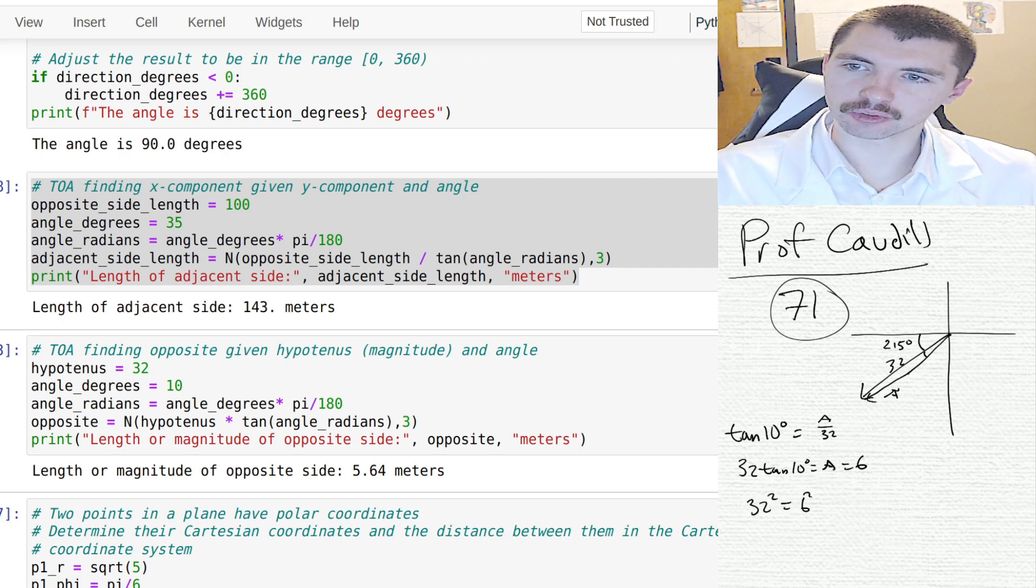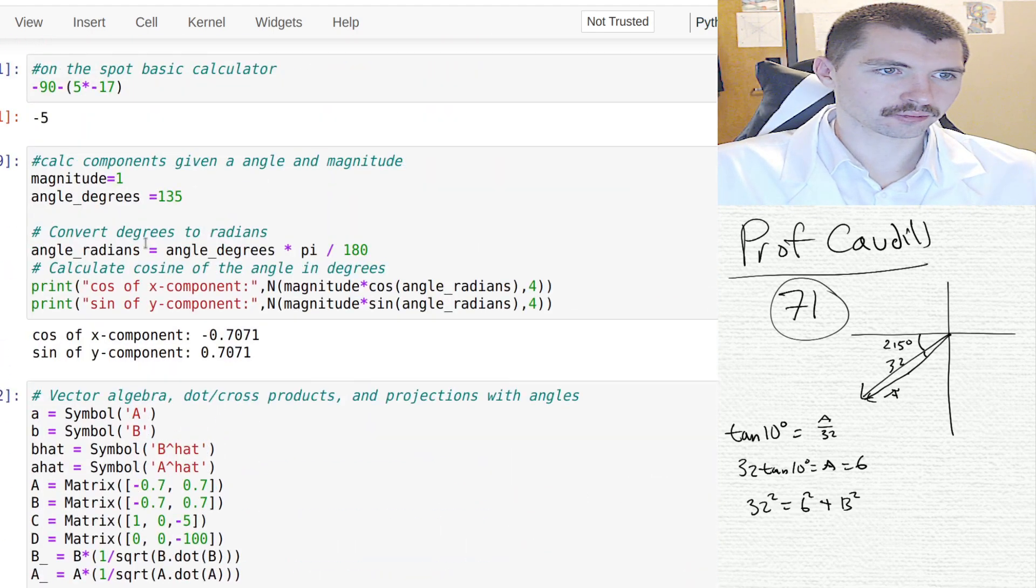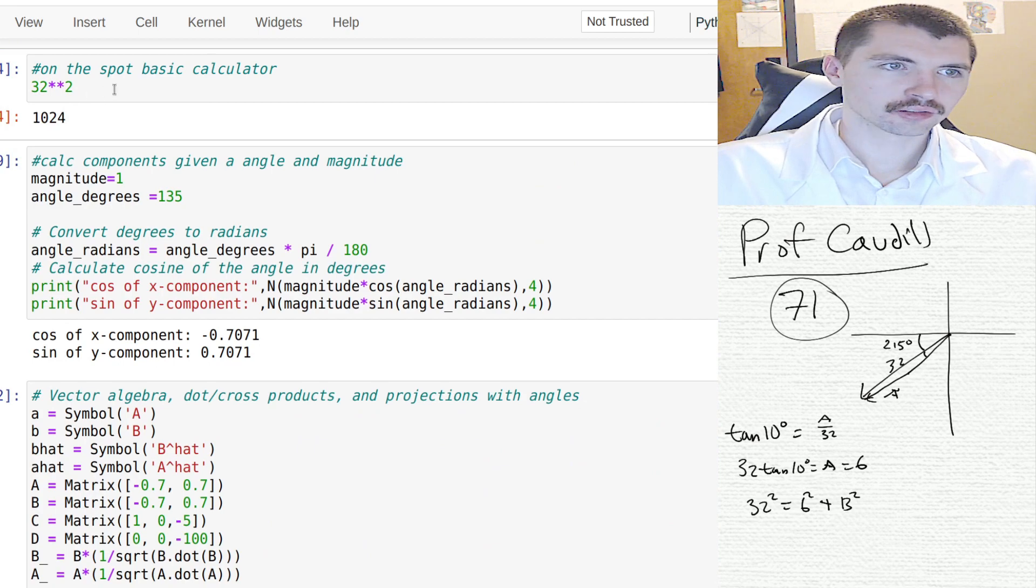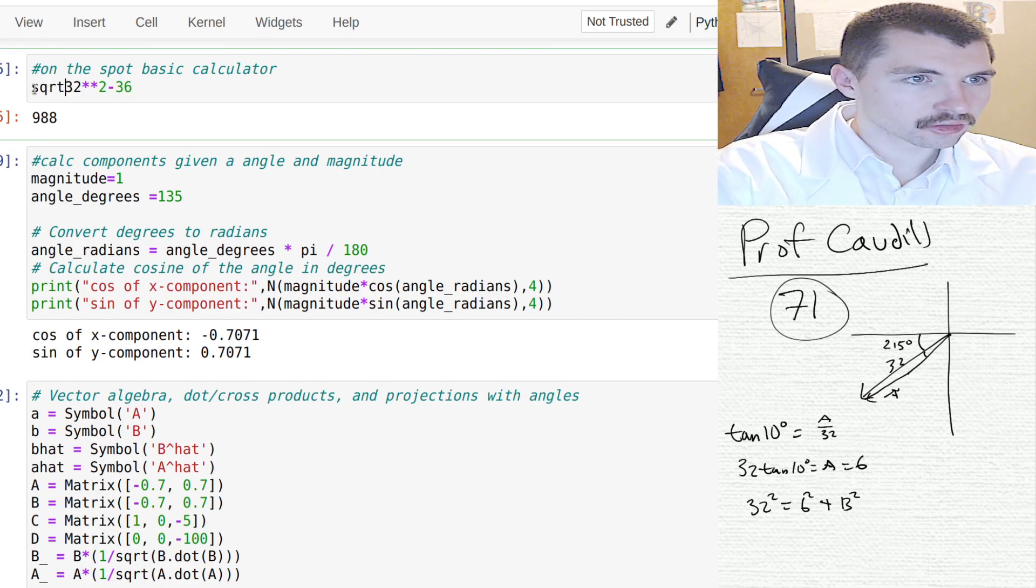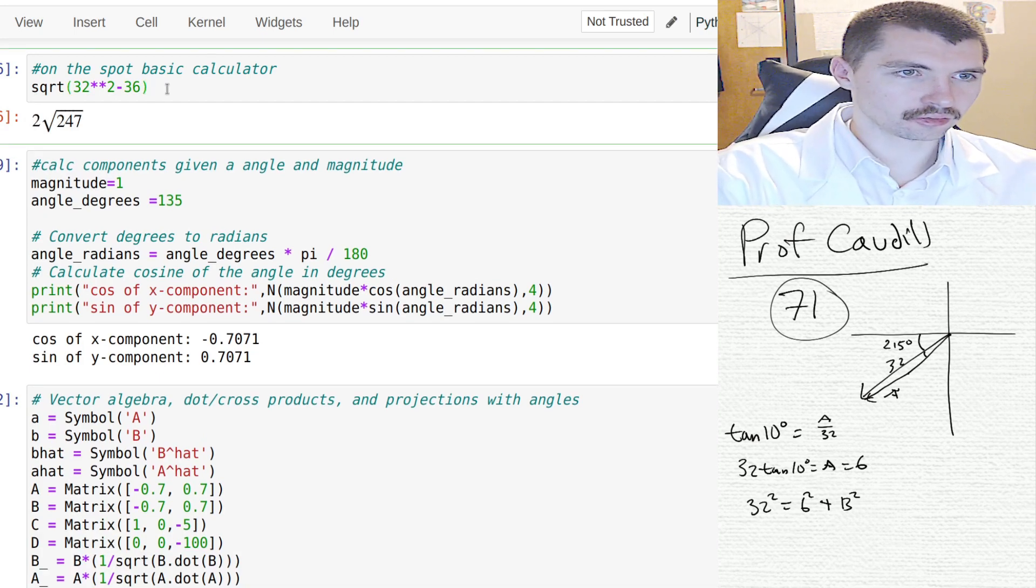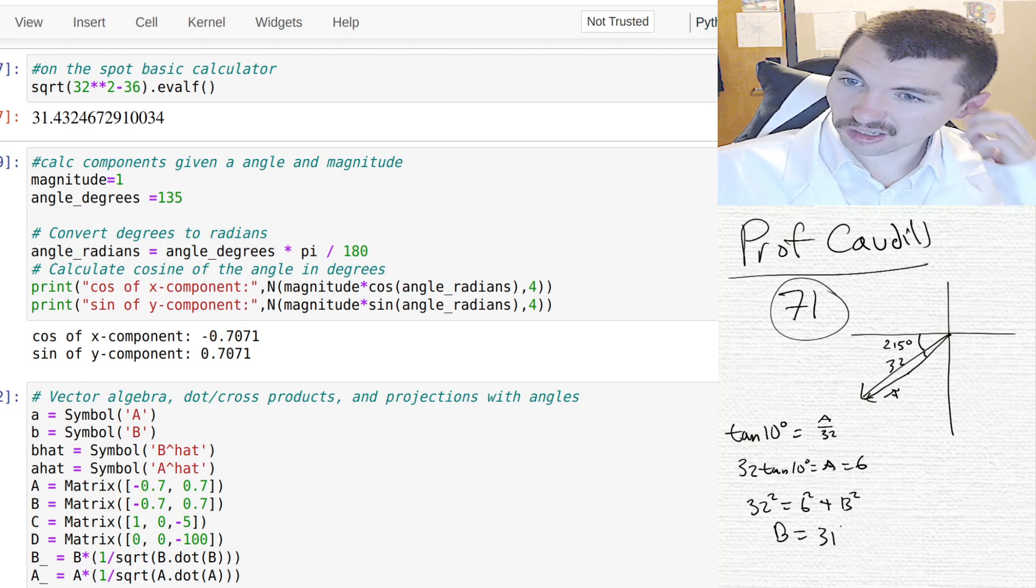Okay, so we're getting 5. Then once you find that, you don't have to do any of the trig, you can just use Pythagorean theorem. You're going to take 32 squared minus 36, no wait, minus 5 squared equals 988. Square root of that gives b equals 31 meters.